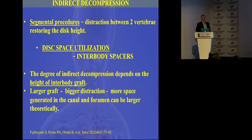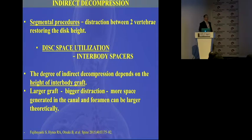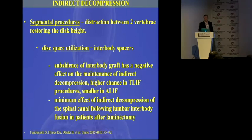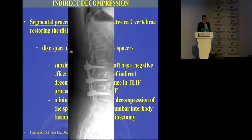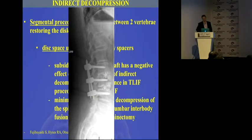The degree of indirect decompression will be dependent on what you do with the disc. If you open the disc more, you gain more space in the foramen. A larger graft and bigger distraction generate more space in the canal and foramen — that is essentially better indirect decompression. What can play against you is subsidence: it will make your good results lost in the future. Also, your results will not be great if you don't have good posterior elements. As you can see here, these cages are totally sunken into the vertebral body, so whatever disc height had been gained initially is now lost.